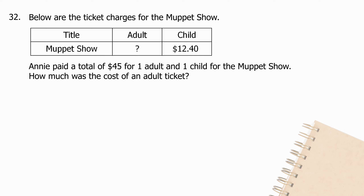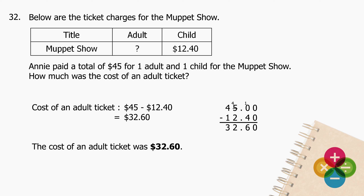Question 32: Below are the ticket charges for the Muppet Show. Annie paid a total of $45 for one adult and one child ticket. How much was the cost of an adult ticket? Subtract $12.40 from $45 and the difference is $32.60. The cost of an adult ticket was $32.60.